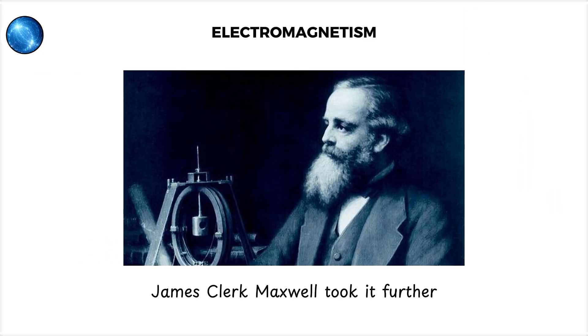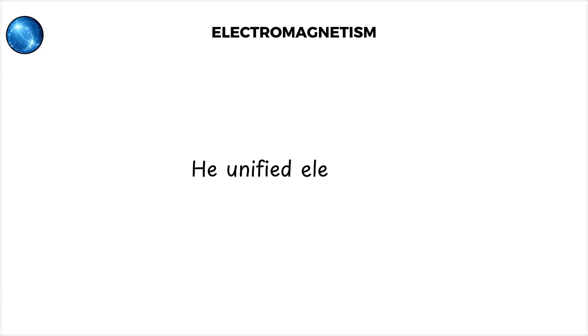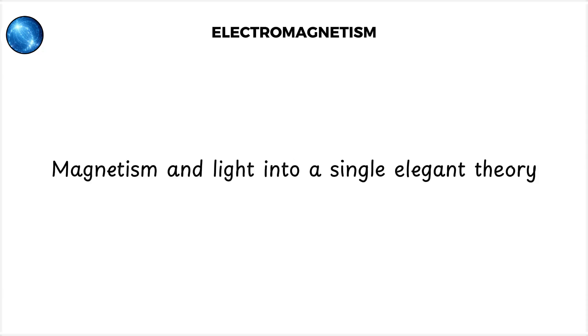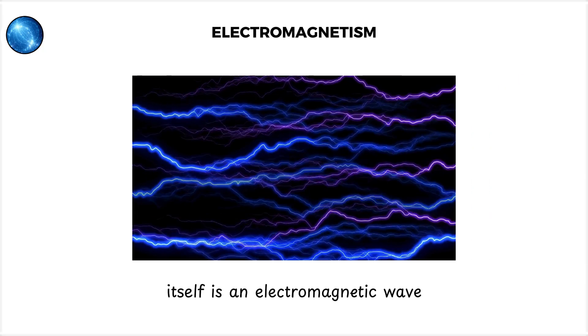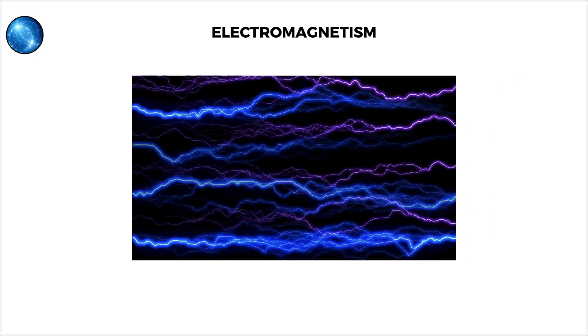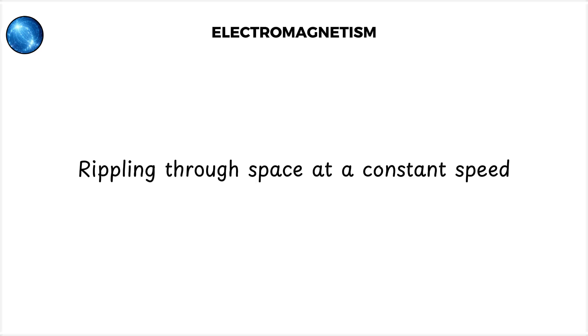James Clerk Maxwell took it further. He unified electricity, magnetism, and light into a single elegant theory. His famous equations showed that light itself is an electromagnetic wave, rippling through space at a constant speed.